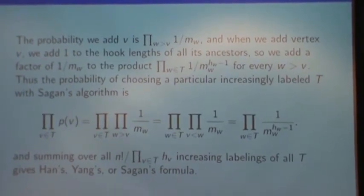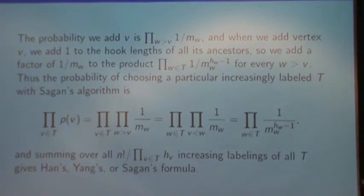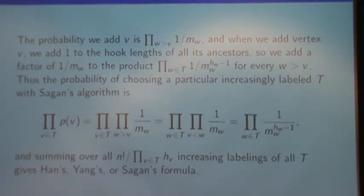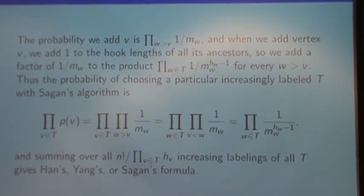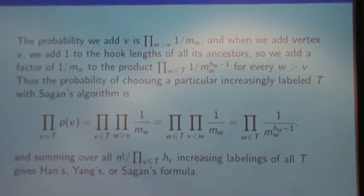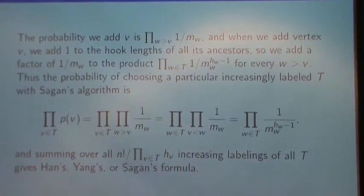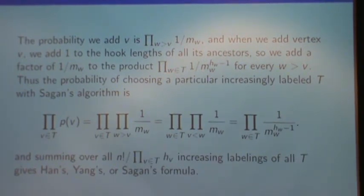And the proof for Sagan's algorithm is almost as natural. The probability we add a particular vertex is 1 over Mw, where Mw is the product of the number of children's slots for its ancestors. And when we add that vertex, we're adding 1 to the hook lengths of all of its ancestors. So that means that the product of 1 over Mw to the hook lengths is increased by a factor of 1 over Mw for each ancestor.